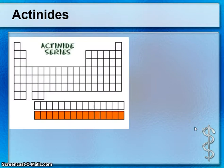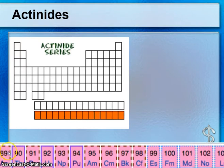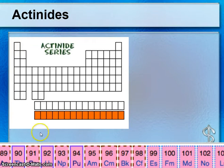The actinides are found at the very bottom of the chart. These are all radioactive, and elements 93 through 103 are all man-made, created in labs with particle accelerators, also called atom smashers. The lanthanides and actinides both belong near Group 3 but are placed at the bottom since they can't all fit there.